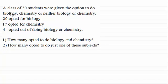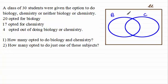So we've got here a class of 30 students were given the option to do biology, chemistry or neither biology or chemistry and 20 opted for biology, 17 opted for chemistry and 4 opted out of doing biology or chemistry. So in order to set out this data if we draw a Venn diagram in the usual way, we have the universal set, two sets here overlapping B for the people who opted for biology and C for those that opted for chemistry.